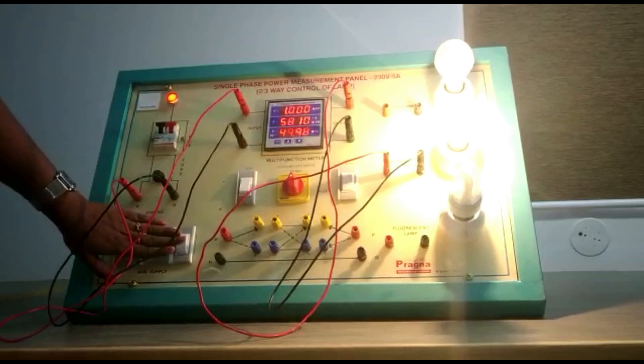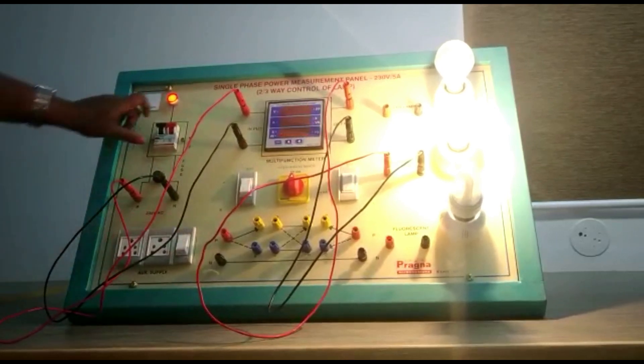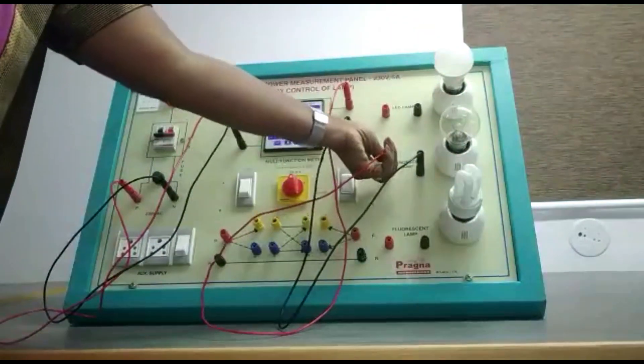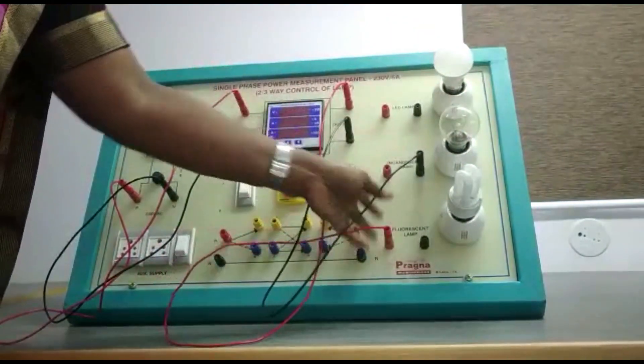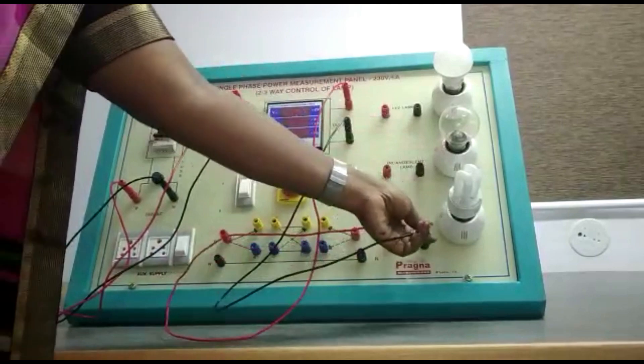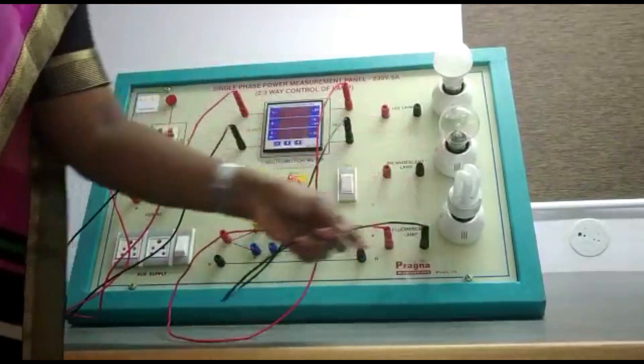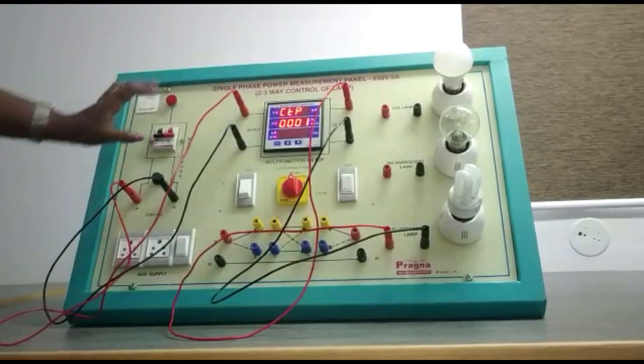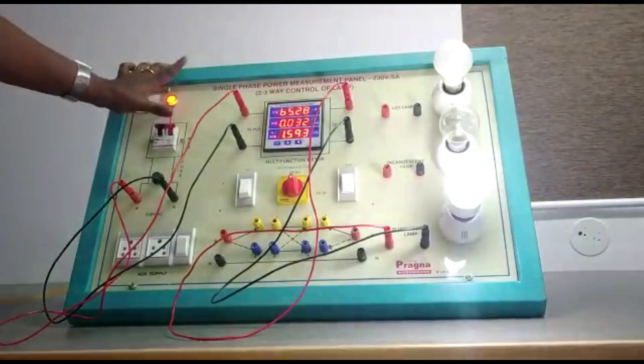After noting this down, switch off the meter and the MCB, then make the connections across the fluorescent lamp. Repeat whatever you have done for the incandescent lamp - turn on the meter and turn on the MCB.